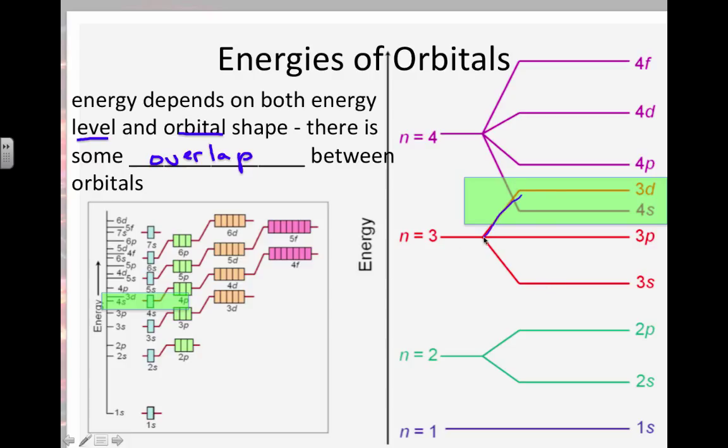Here's where we see the 3d coming in, filling in after the 4s has already been filled. So we put electrons in 4s first before we fill in 3d, and that's why the periodic table is structured the way it is.